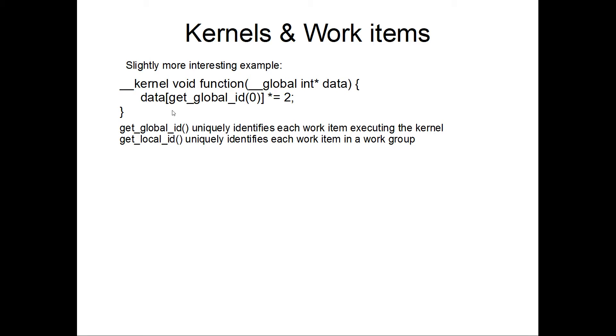So if this was the first one being executed, this is most likely going to be 0. So I'll get the first element in the data array, multiply it by 2, and then store it back.